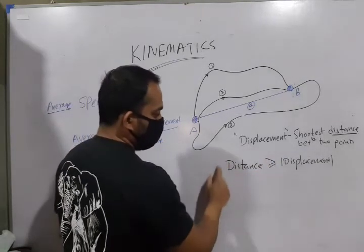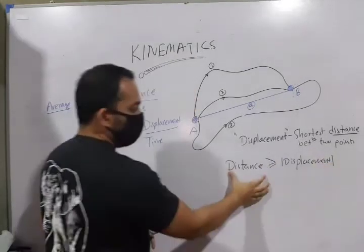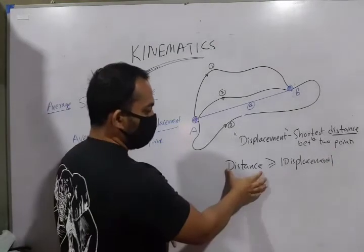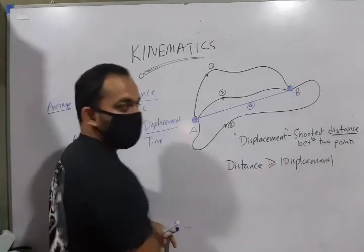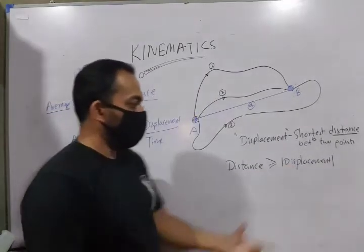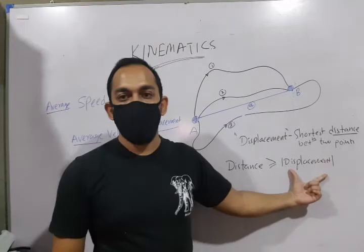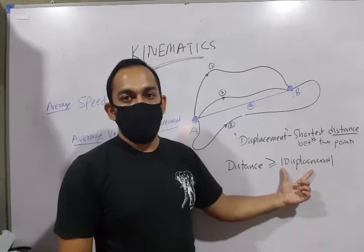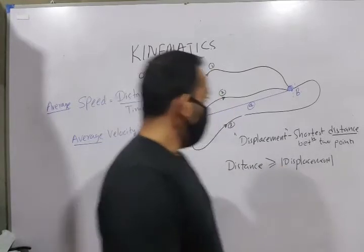So, I can make this distinction inequality here that a distance between two particular points, distance is always greater than or equal to the magnitude of the displacement. And why did I put magnitude here? Because displacement is a vector quantity. So, we are only referring to the magnitude of that vector quantity.